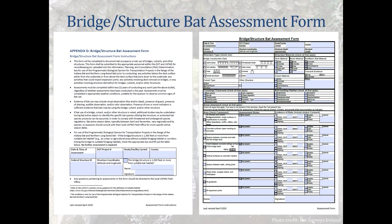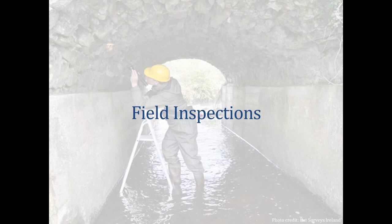Data sheets are important for recording bat occupancy or bat use of bridges, culverts, and other transportation structures. This form was developed to aid in the implementation of the programmatic biological opinion for transportation projects in the range of the Indiana bat and the northern long-eared bat. The next series of video clips will walk you through a thorough field inspection of four common transportation structures where bats roost, the features of each structure that provide habitat for bats, and the key indicators of bat use and occupancy.